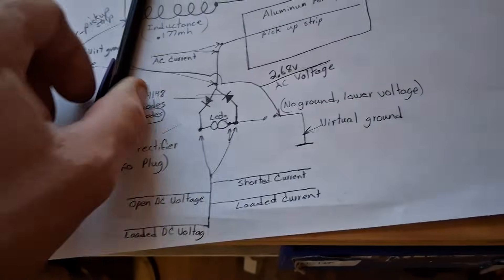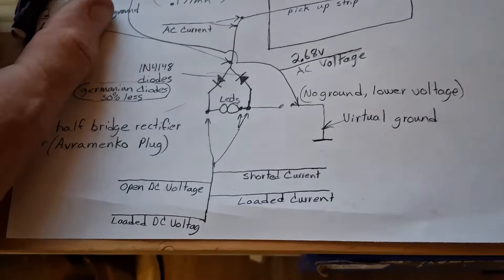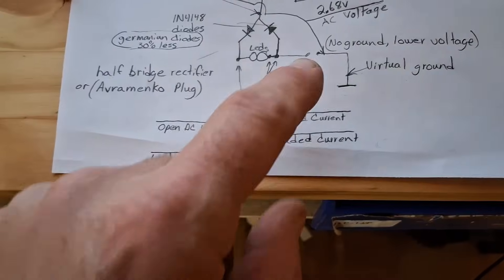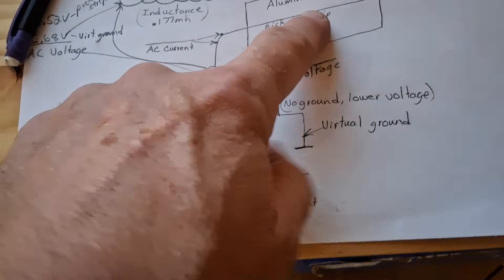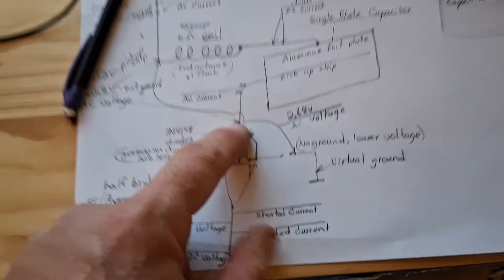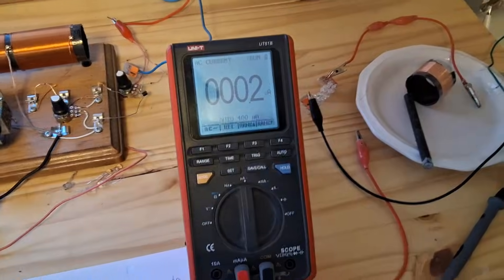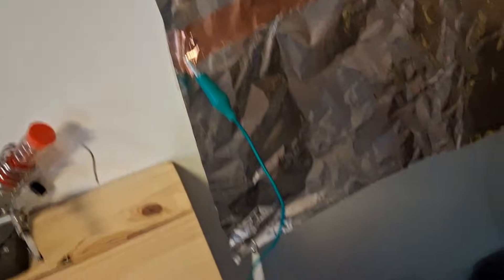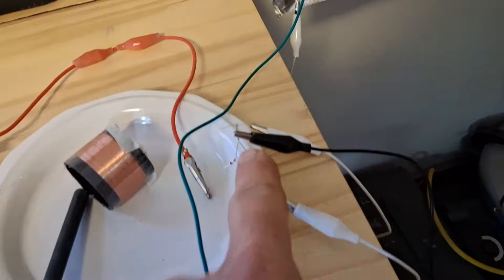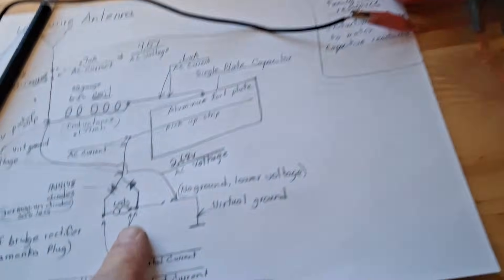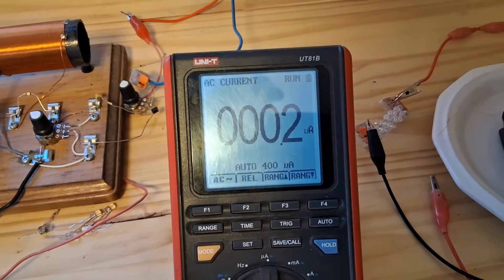And what else did I want to test with the AC current right here between the pickup strip and the diodes? I want to check that too. All right, I got it connected up. This is coming off of that pickup strip through the meter back to these diodes. That's the current, 0.2 microamps. It's not a whole lot right there.